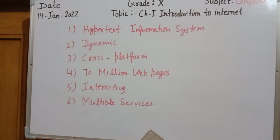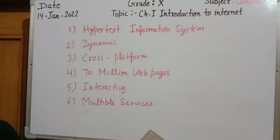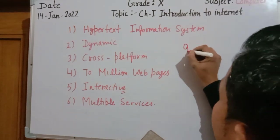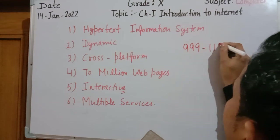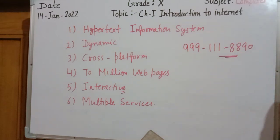In today's session, we have covered what is network, types of network, what is internet, how to access the internet, which types of connections can be created, what is WWW, and what are the features of WWW. In the next session, we will continue with the next topic. If you have any doubt, you can give me a personal call or send a message on WhatsApp. Thank you and have a nice day.